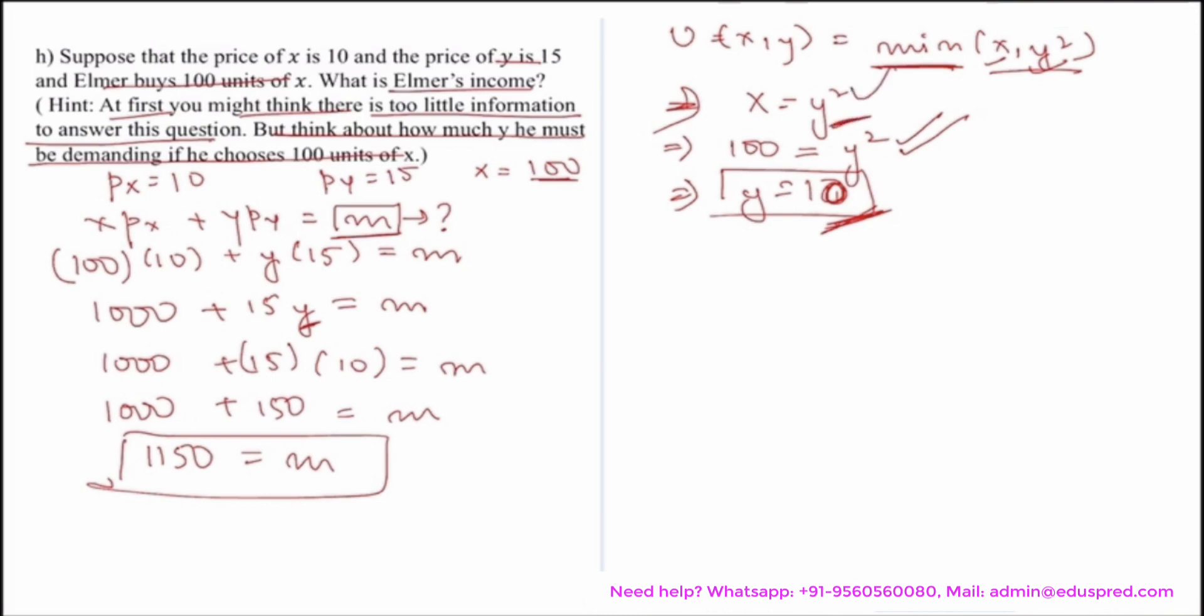From the minimum function, the consumer would always be consuming here. Sometimes you have to think, this is the information I have - what information can I derive from that given information? And can I use the current information also given in my particular part? So mixing and matching everything, you would be easily able to calculate your questions. That was all for this video.